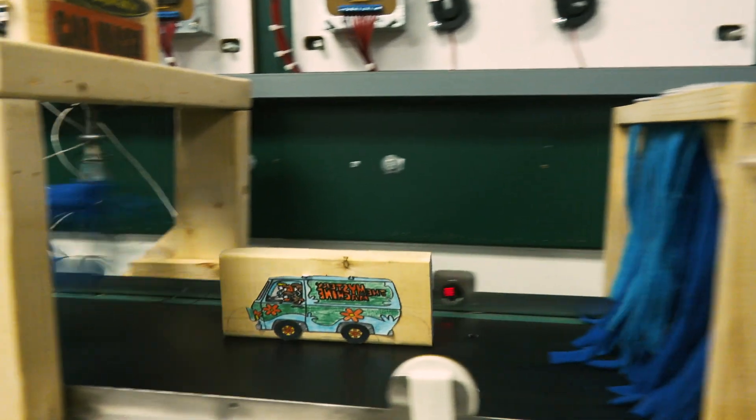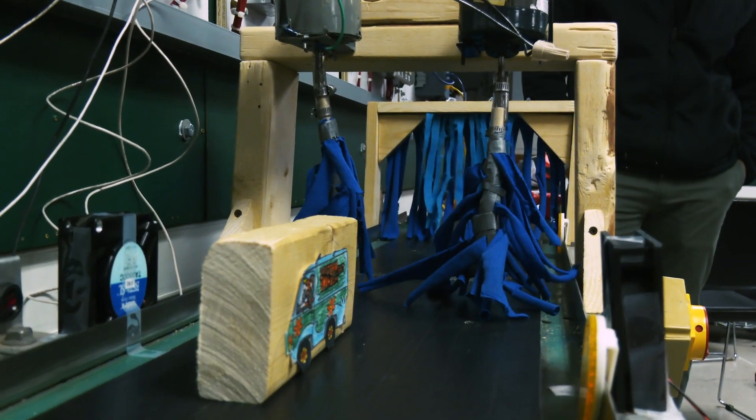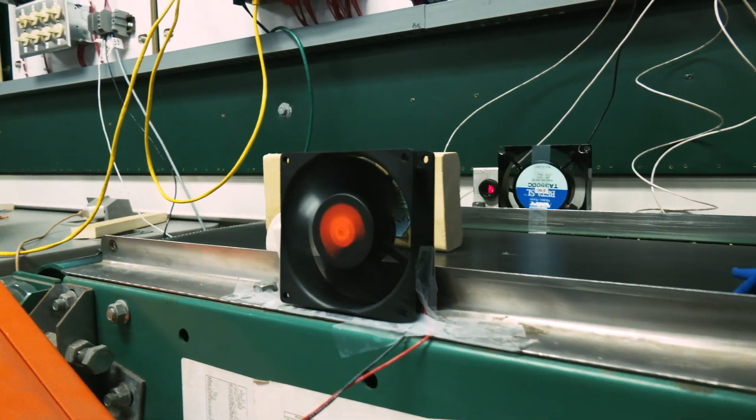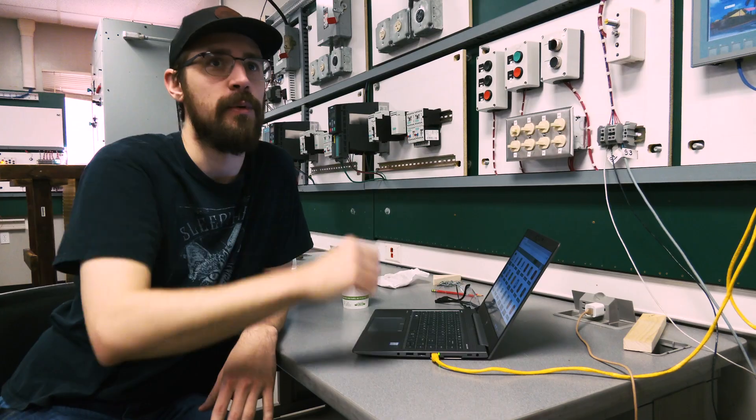When it goes through the second sensor, the motors will start spinning the washers. It will go until it hits the fan sensor where it will stop for five seconds. The fans will activate. Then after the five seconds it will continue off and then our green light will come back on.